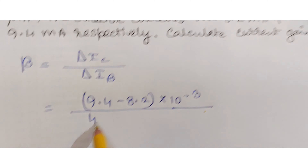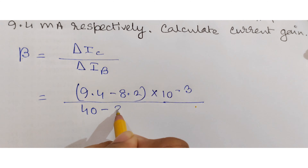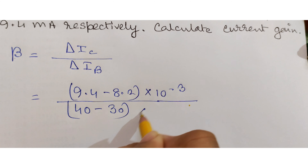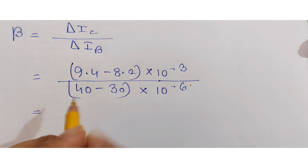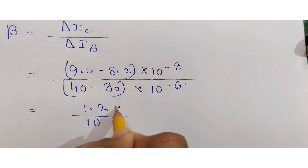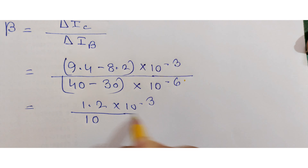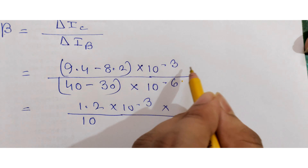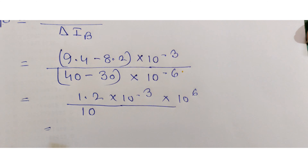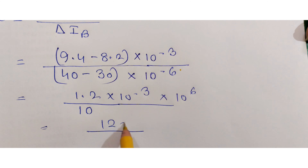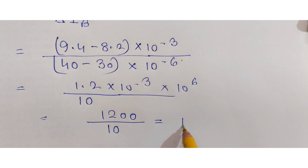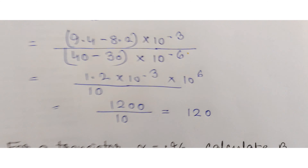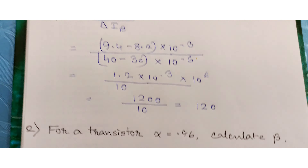The change in collector current is 1.2 × 10⁻³ amperes. The change in base current is final minus initial: 40 minus 30 microamperes, which is 10 × 10⁻⁶ amperes. So we get 1.2 × 10⁻³ divided by 10 × 10⁻⁶. Bringing 10⁶ to the numerator gives 1200 divided by 10, so beta equals 120.